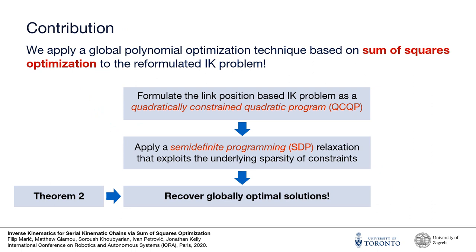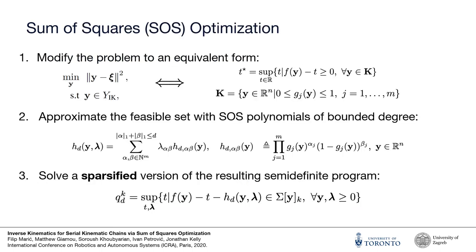We've demonstrated that inverse kinematics can be written as an optimization problem with quadratic cost and constraints. Next, we'll relax this non-convex polynomial optimization problem into a convex semi-definite program that can be quickly solved with generic interior point method-based solvers. In our paper, we demonstrate in theorem 2 that this relaxation leads to a certifiably globally optimal solution, provided the nearest neighbor point xi is close enough to a valid manipulator configuration. The sparse bounded sum of squares technique used to produce a convex semi-definite relaxation of our problem formulation is very technically involved.